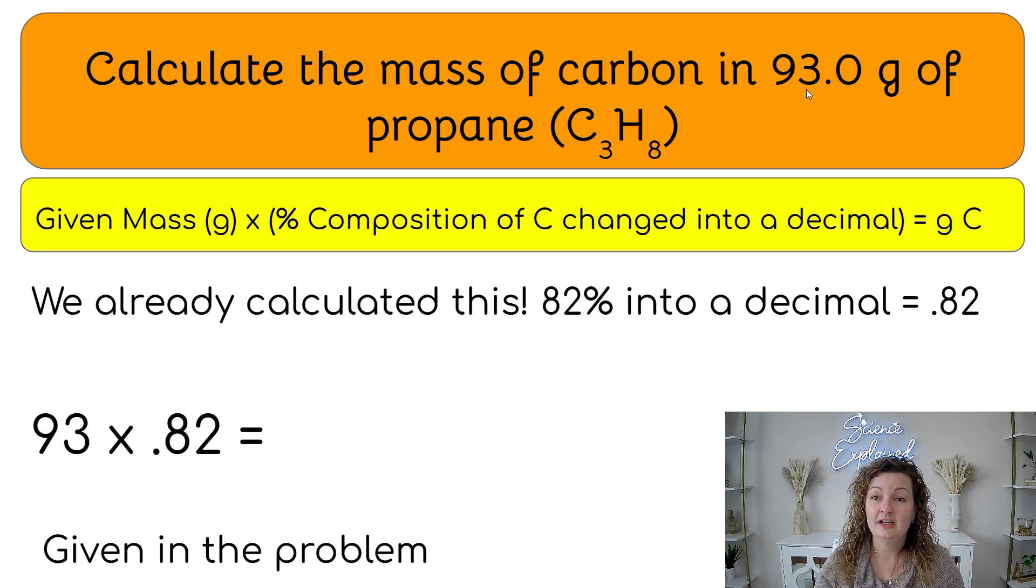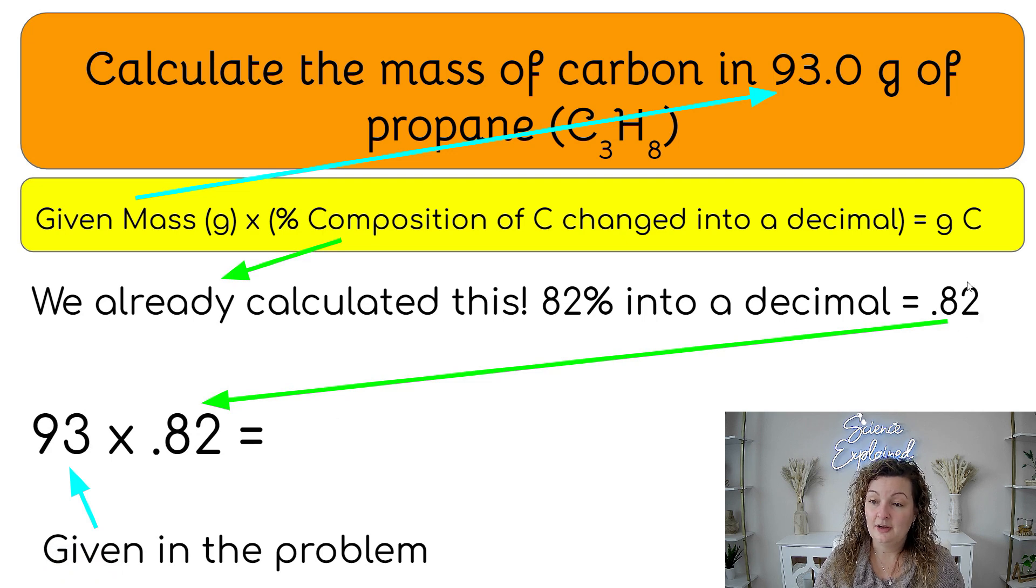Okay. So we're doing the 93 from our word problem right here. That's already given. And then we are going to multiply that by a 0.82, which has been changed from the percent to the decimal. And we end up getting 76.26 grams of carbon.